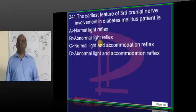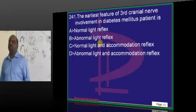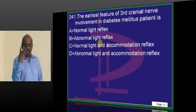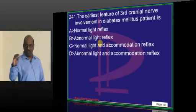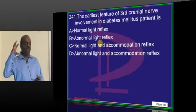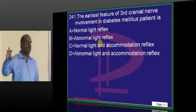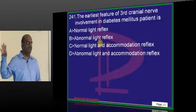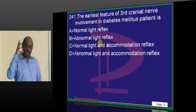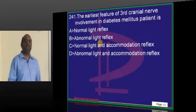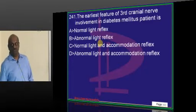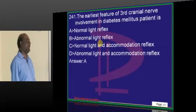Third cranial nerve palsy — the oculomotor nerve controls accommodation, not the light reflex. So when the oculomotor nerve is affected, the light reflex can still be preserved even with derangement of the accommodation reflex.